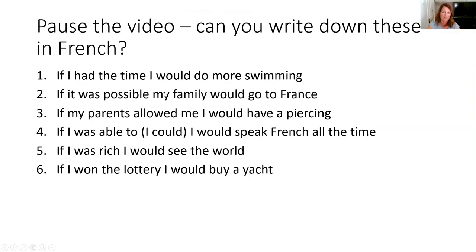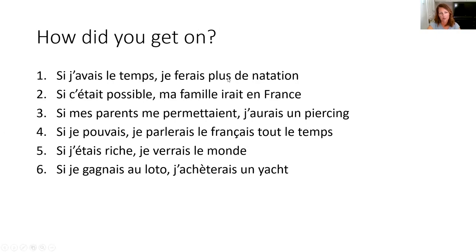Last time to pause the video — write these sentences down in French, then check your answers. Here we go: 'Si j'avais le temps, je ferais plus de natation' — if I had more time, I would do more swimming. 'Si c'était possible, ma famille irait en France' — be careful, 'ma famille' is singular so we use the AIT form, not the 'they' form. 'Si mes parents me permettaient, j'aurais un piercing.' 'Si je pouvais, je parlerais le français tout le temps.' 'Si j'étais riche, je verrais le monde.' 'Si j'avais gagné au loto, j'achèterais un yacht.'